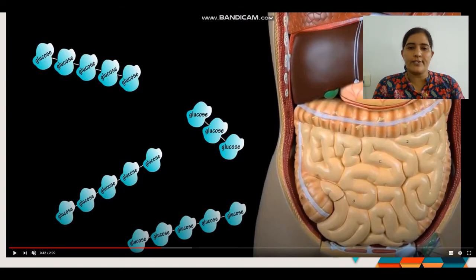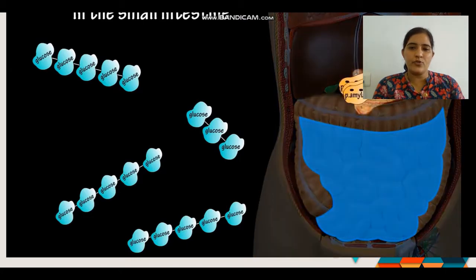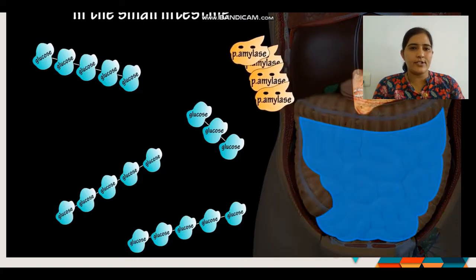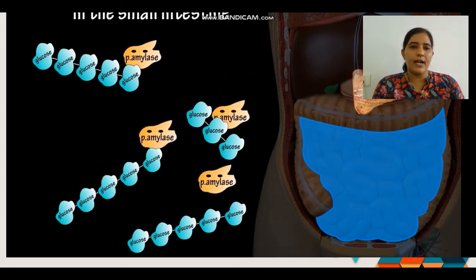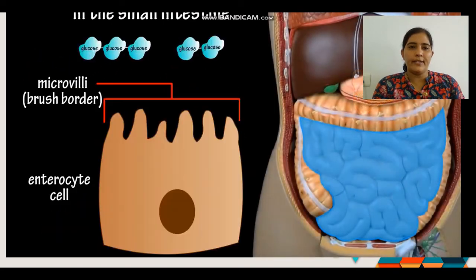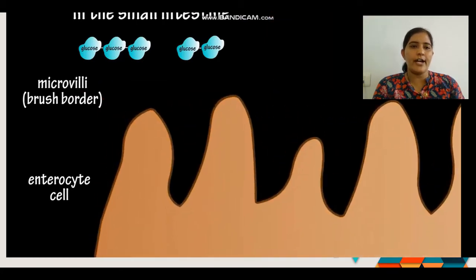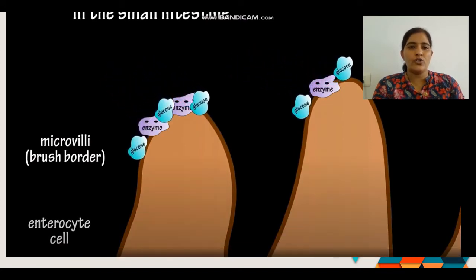After the stomach, food enters the small intestine. When the pancreatic duct opens, pancreatic juice containing pancreatic amylase is secreted. This breaks down the remaining starch into smaller units, which are then further broken down. Micro-villi are present in enterocyte cells, which have specific enzymes that convert these disaccharides into monosaccharides.